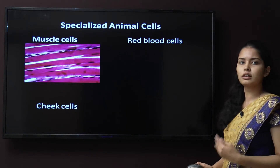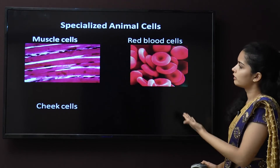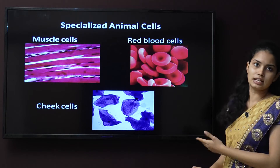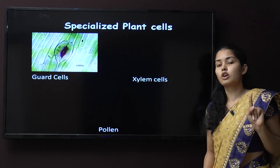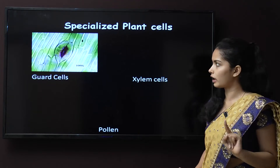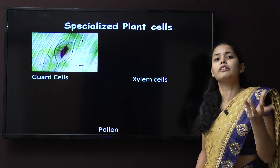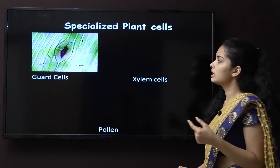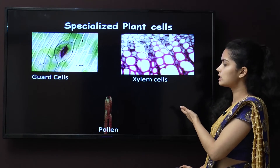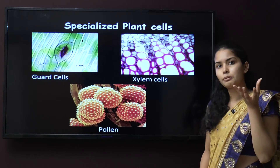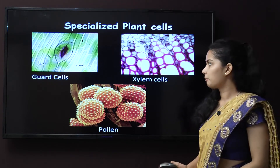The specialized cells include muscle cells, red blood cells, and cheek cells which are stained. Plant cells are also multicellular eukaryotic organisms with specialized tissues or cells — such as guard cells, xylem cells through which water passes, and pollen cells, which are present in the anther and are used for pollination and fertilization in plants.